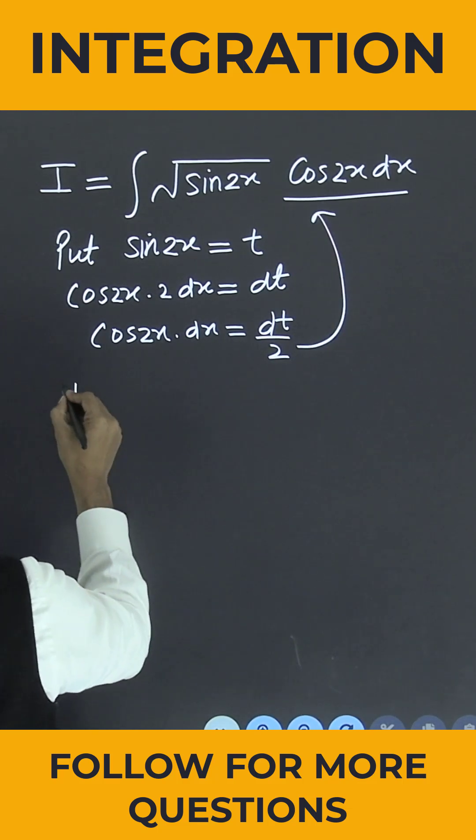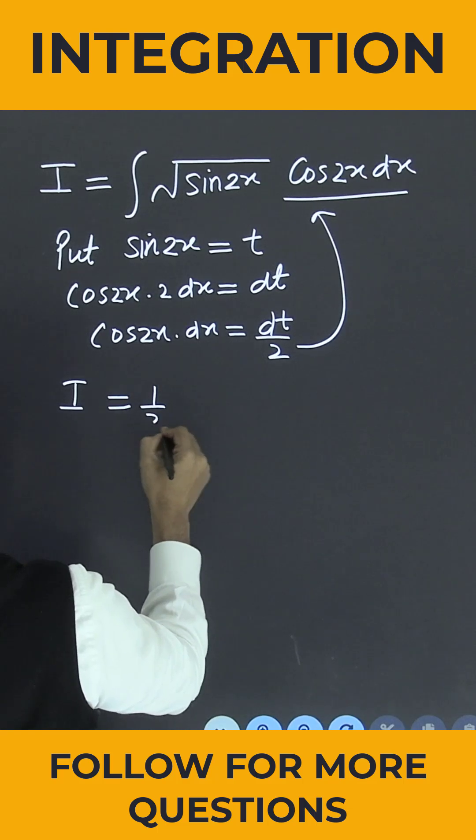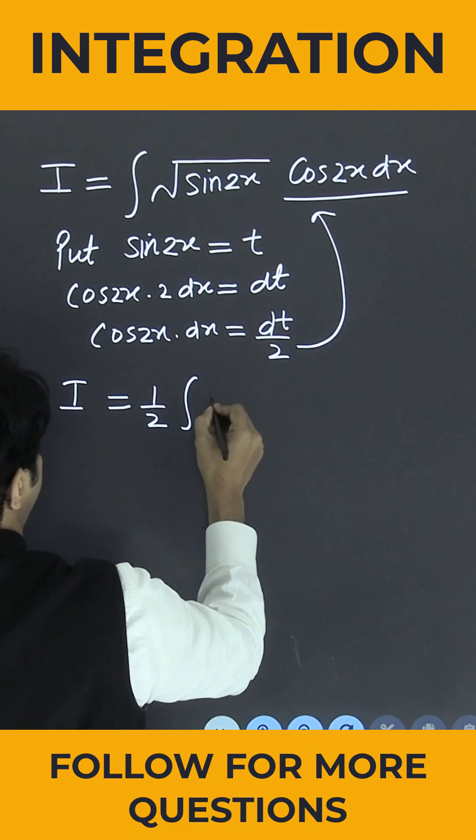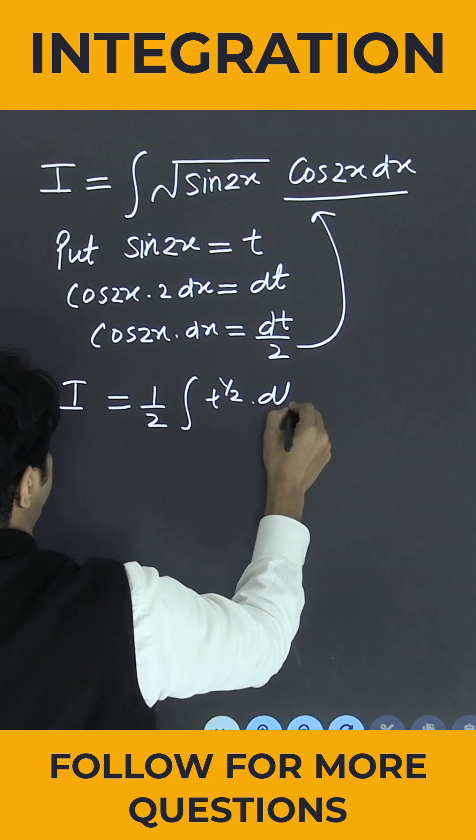Now put in the above integral. So capital I will be equal to 1 by 2 integration. So it will become t to the power 1 by 2 into dt.